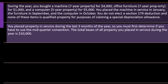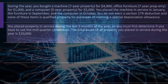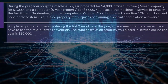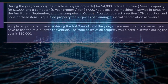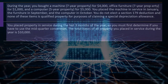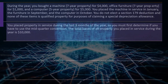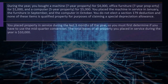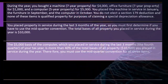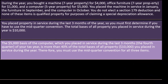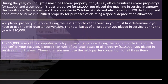People sometimes try to game the system by buying everything at the end of the year to get a six-month depreciation even though they bought everything in the last month. The IRS says: to stop that, if you buy everything at the end of the year, you have to use the mid-quarter convention instead of the half-year convention, so you don't get as big a benefit. The $5,000 basis of the computer, placed in service during the last three months — the fourth quarter — is more than 40% of the total basis of all property ($10,000) placed in service during the year.